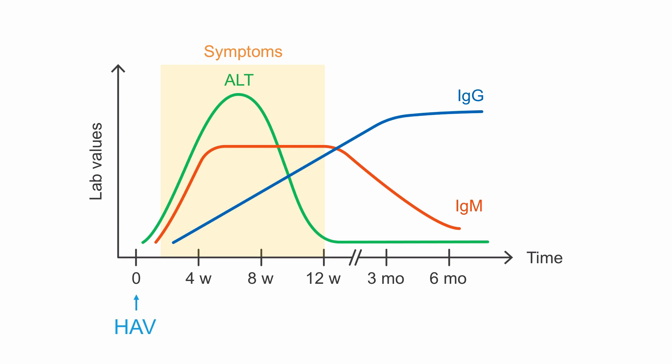We can also split the course of infection into different phases. We can distinguish an acute phase at the beginning, which is characterized by high ALT levels, high IgM levels, as well as rising IgG levels.